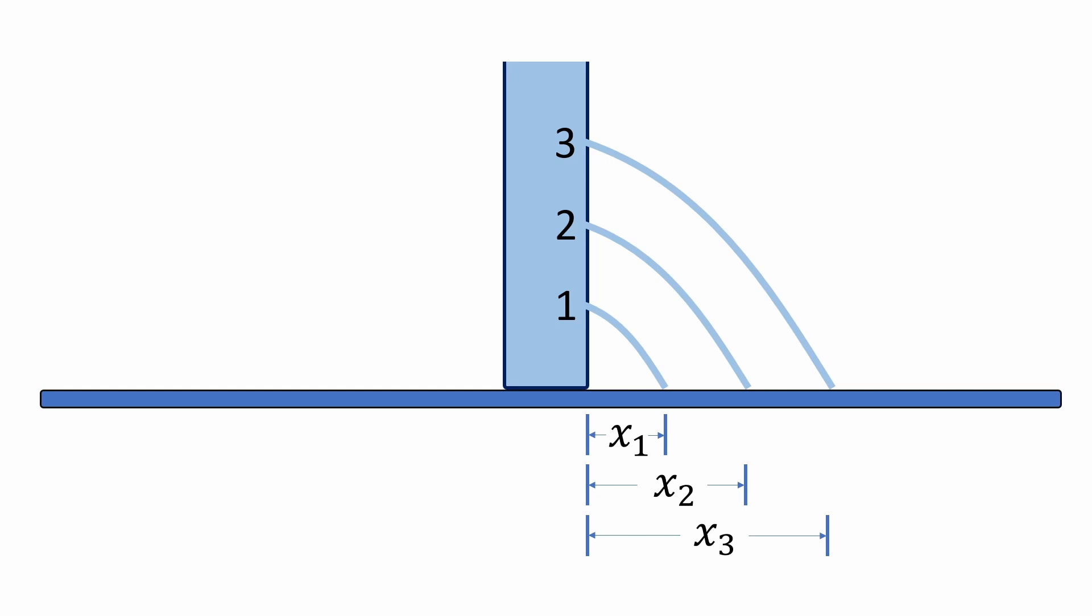We can actually treat this like a projectile motion problem as if we were throwing a ball from each of the holes in the container. So, the horizontal distance x is given by v times t, where v is the horizontal exit velocity of the water from each hole, and t is the time it takes for the water to hit the ground. We'll now write each of the formulas next to their respective distances.